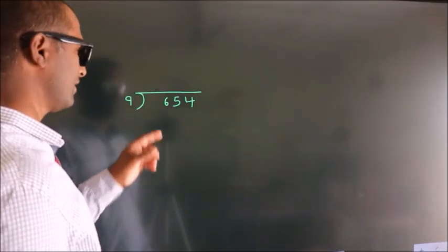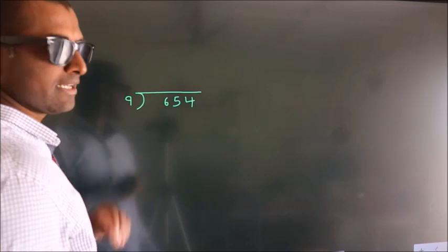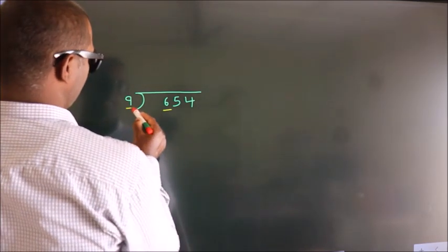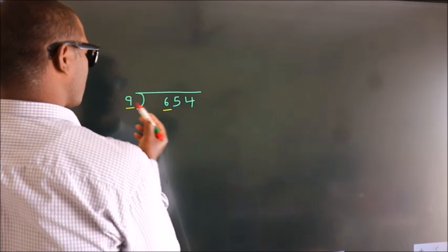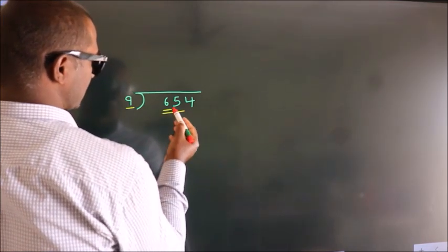How to divide 654 by 9? See, here we have 6, here 9. 6 is smaller than 9, so we should take 2 numbers, 65.